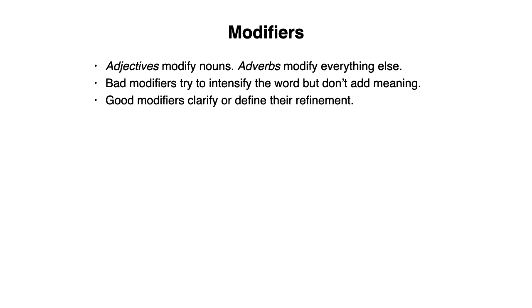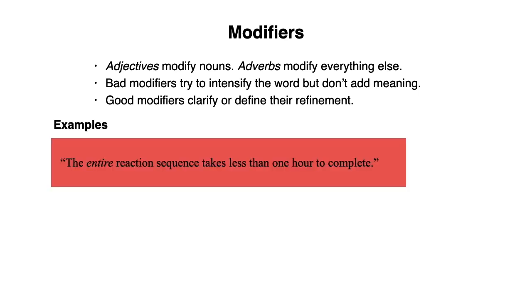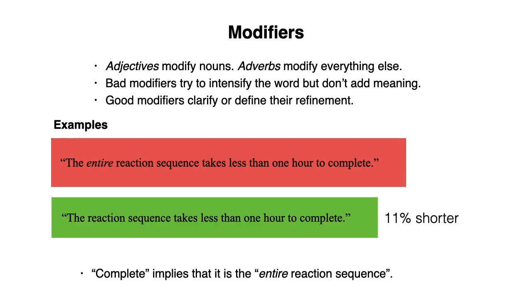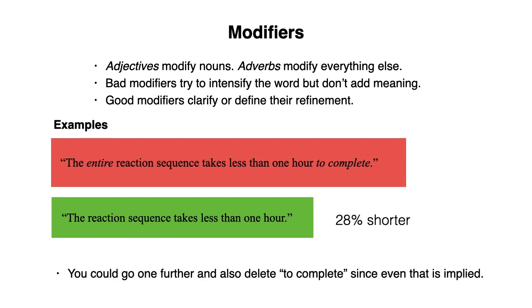There are also some kind of modifiers that you would like to avoid. Bad modifiers try to intensify the word, but they don't add any meaning. Let's look at this example. The entire reaction sequence takes less than one hour to complete. The word complete implies that it is the entire reaction sequence, so it would be shorter to just say, the reaction sequence takes less than one hour to complete. Now you could go one further and also delete to complete, since even that is implied. And just say, the reaction sequence takes less than one hour. That's 28% shorter.